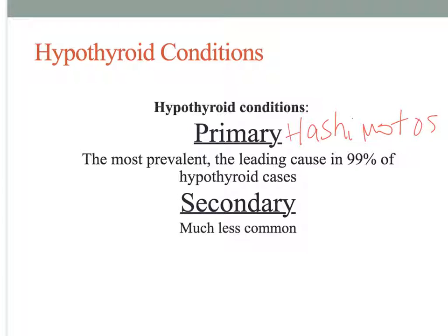Secondary causes refer to a different cause outside of the thyroid gland — this would include thyroid surgeries. Sometimes thyroid surgeries are done to treat a hyperthyroidism, and if we remove someone's thyroid, they no longer have the ability to produce their own thyroid hormones, so they would develop hypothyroidism. Hashimoto's thyroiditis results when the body pathologically recognizes thyroid antigens as foreign, leading to a chronic immune response that eventually leads to atrophy of the thyroid follicles.